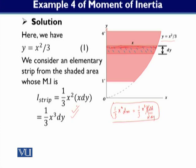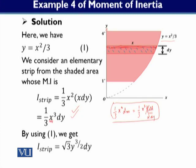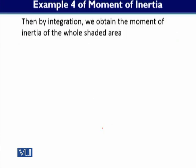Now you have to integrate over the entire portion to get the moment of inertia of the whole shaded area. You integrate with limits 1 to 4 along the y-axis. You have to express x in terms of y: from y = x²/3, we get x = √(3y), so x³ = (√3·y^(1/2))³ = 3^(3/2) · y^(3/2). This gives i_strip in terms of y ready for integration.